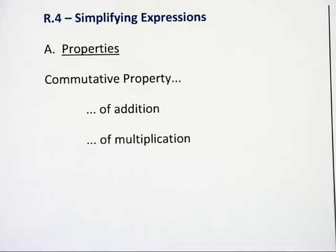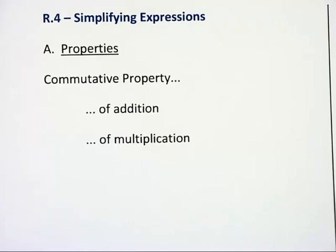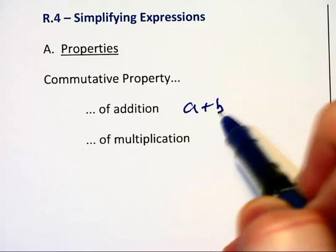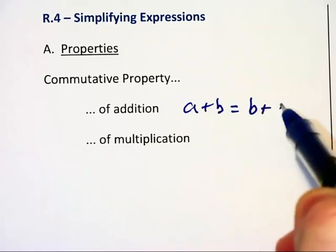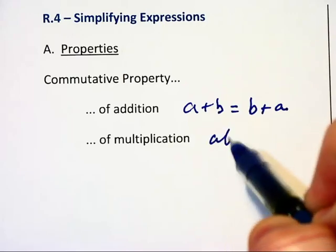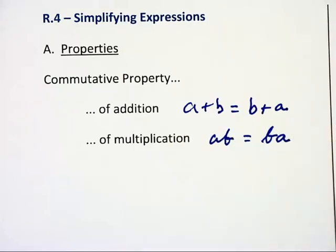Let's look at some of the different properties of real numbers. The commutative property of addition says a + b = b + a, and the commutative property of multiplication says ab = ba.